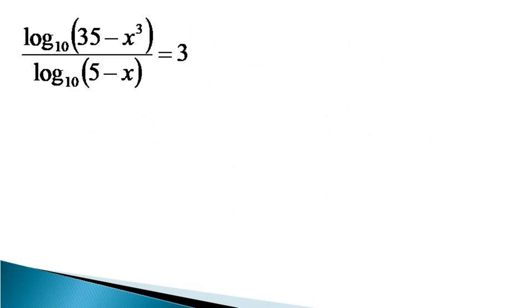To solve this equation, first we linearize it by cross multiplication. The cross multiplication gives an equivalent equation as log of 35 minus x cube to the base 10 is equal to 3 log of 5 minus x to the base 10.